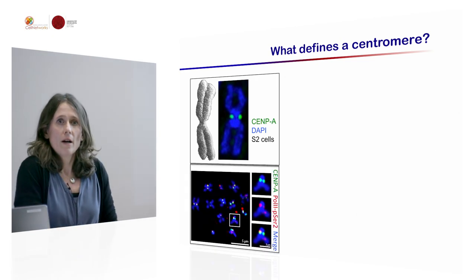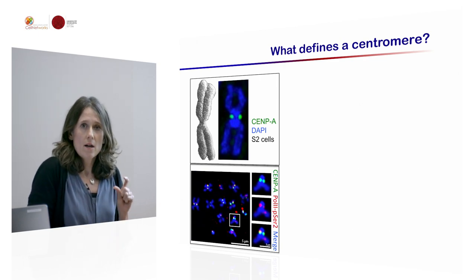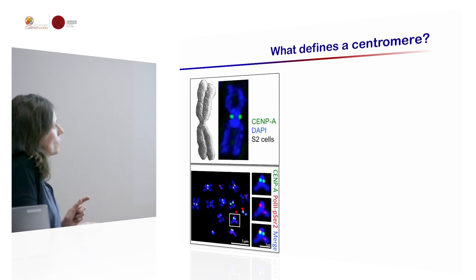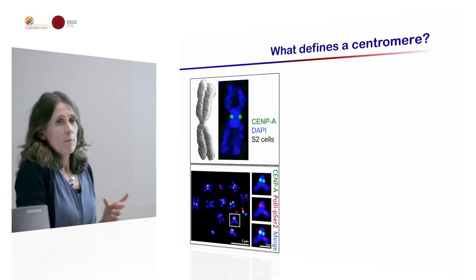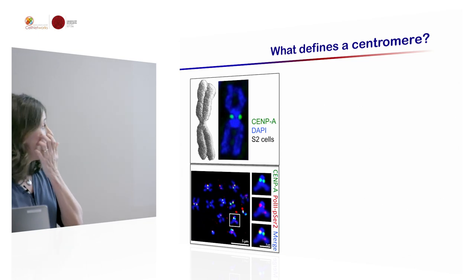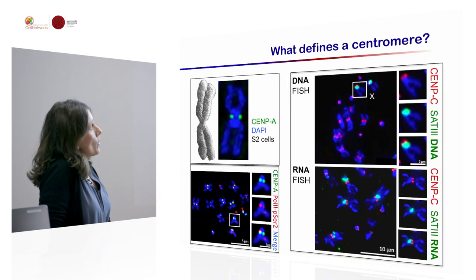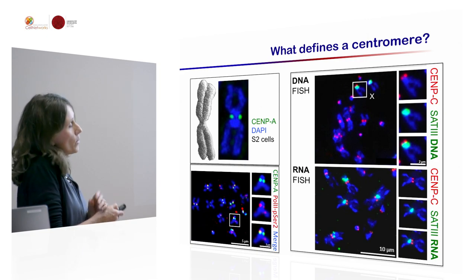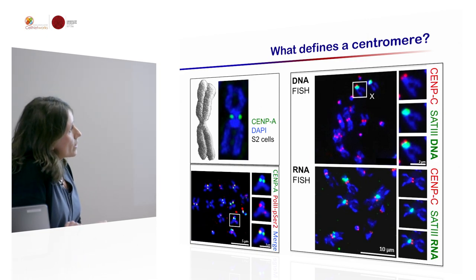What we and also other people found is that centromeres are transcribed in mitosis. You see here the active form of RNA Polymerase II at mitotic chromosomes, so it seems like there is transcription in mitosis at centromeres. We looked further and found that satellite repeats from those dark heterochromatic parts are actually transcribed.